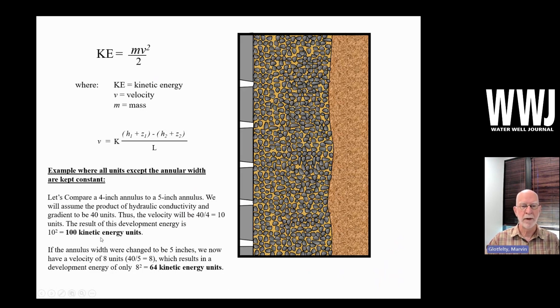So we will reduce by increasing from a four to five inch annulus, keeping everything else the same, by about a third the amount of energy that we're really applying to remove the borehole, the wall cake. So this is important for us to consider.